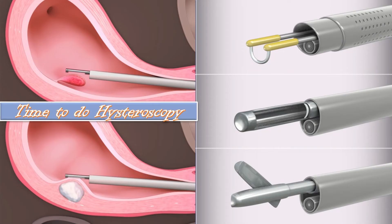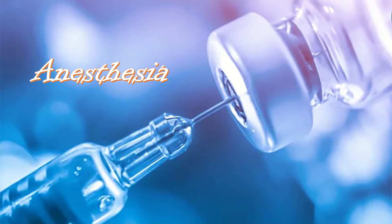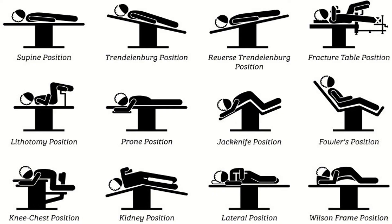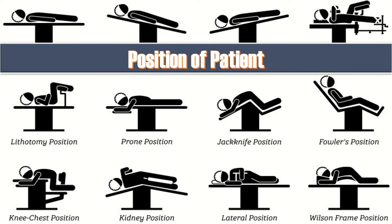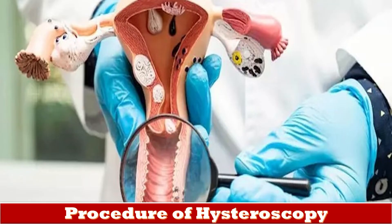The best time to perform hysteroscopy is in the early proliferative phase or immediately following a menstrual cycle. In cases of continuous heavy bleeding, norethisterone 5 mg three times daily for 7 to 10 days may be given prior to examination. Anesthesia is given in the form of paracervical, regional, or general anesthesia, and hysteroscopy is best performed in the lithotomy or modified lithotomy position.